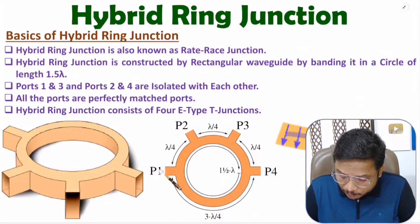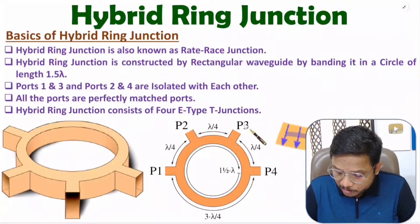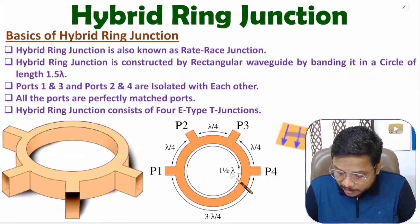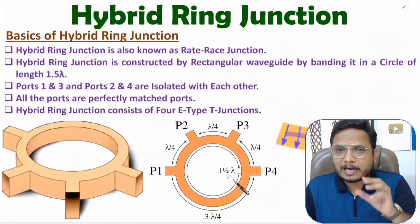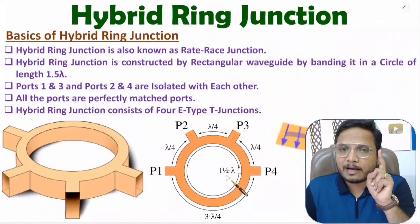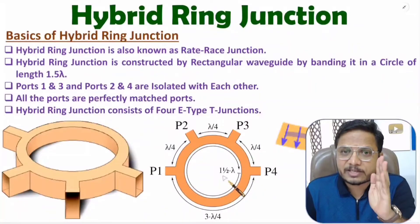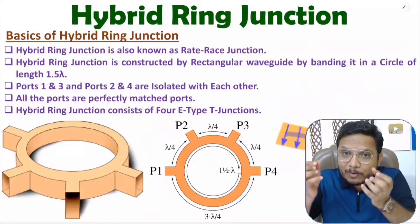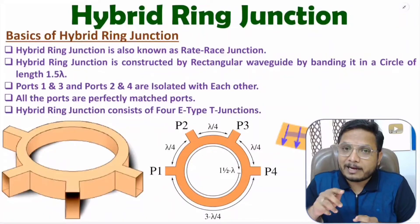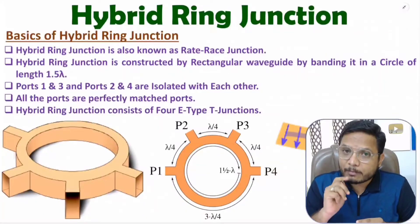From the top view, there are 4 ports in total. The spacing between consecutive ports — port 1 to port 2, port 2 to port 3, port 3 to port 4 — is lambda by 4. The spacing between port 4 and port 1 is 3 lambda by 4, making the total circle length 1.5 lambda.